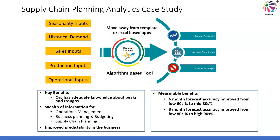Thanks to the algorithm-based tool, we improved 6-month accuracy from 60% to mid 80s, and the 3-month accuracy improved from low 80s to high 90s. This brought in a lot of stability and predictability to the process. Firefighting and finger-pointing cases came down quite significantly. The number of escalations was also reduced by a significant extent. All this thanks to an algorithm-based tool that considered multiple inputs at a very granular level — that is the power of an analytics-based forecasting process that can be deployed at scale and can make a big difference to the way organizations manage their planning process.